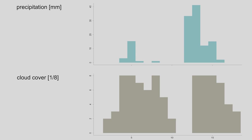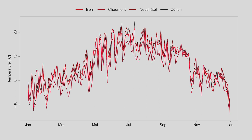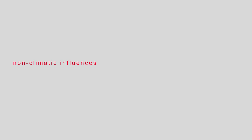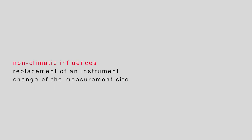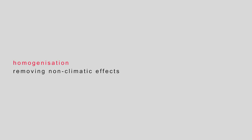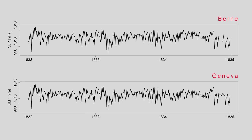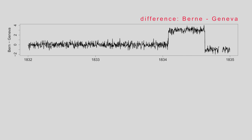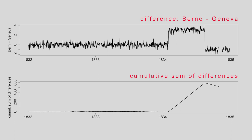Further tests can address the physical consistency between two variables and compare the series to data from neighbouring stations. Even after quality control, meteorological data series may still reflect non-climatic influences. For instance, the replacement of an instrument or a change of the measurement site may lead to a step change. Such non-climatic effects are called inhomogeneities, and the process of removing them is called homogenisation. To detect artificial changes, they must be separated from the real climate signal. Such changes are not always apparent in the original series, but can be detected by subtracting data from a neighbouring station. We plot the cumulative sum of the differences — a simple method to detect breakpoints, which leads to changes in the direction of the lines.